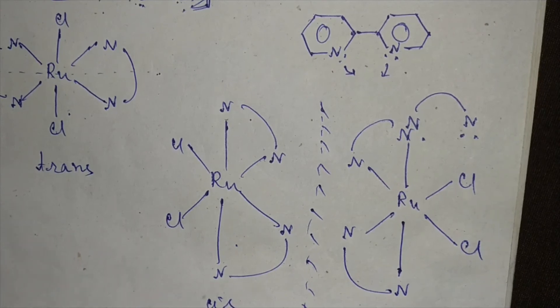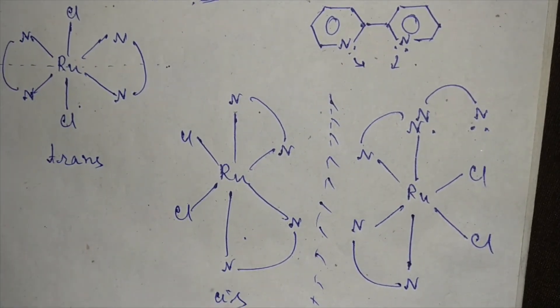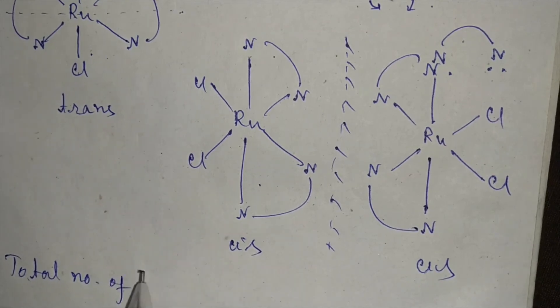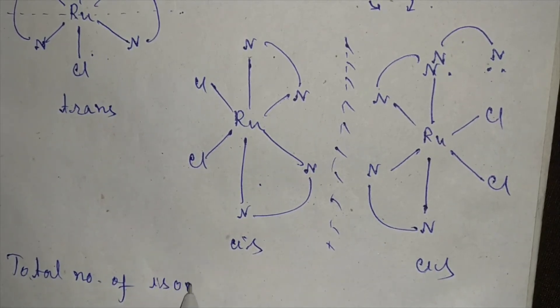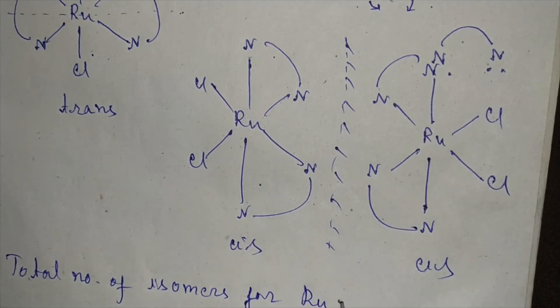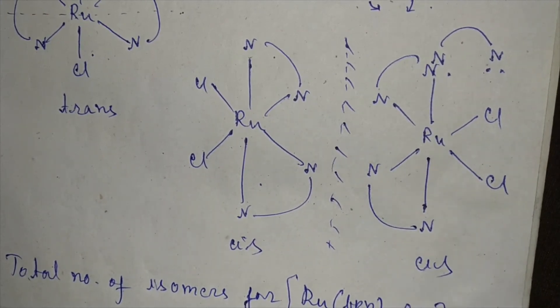So the total number of isomers for [Ru(bpy)₂Cl₂] is three.